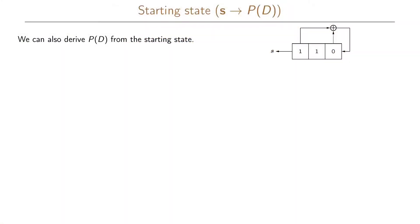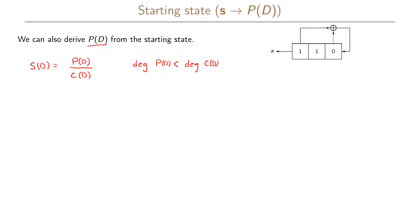In this example we're going to see how we can derive our polynomial P(D) if we know the starting state. So what we have is the D-transform of our sequence S. We know this can be written as P(D) divided by the connection polynomial C(D). We can rewrite this as P(D) equals S(D) times our connection polynomial C(D).